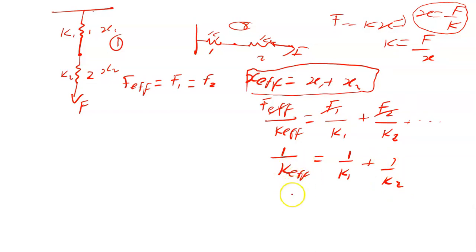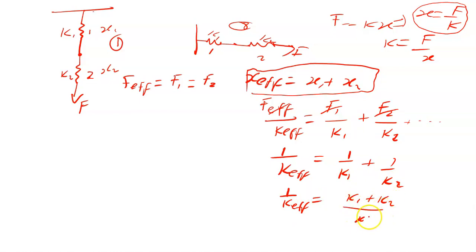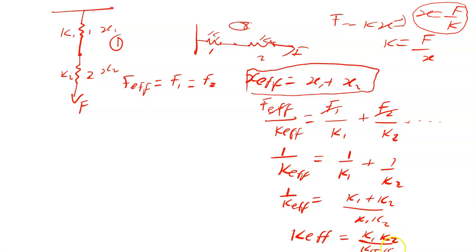Making Keff the subject of the formula, you have: one over Keff equals (k1 plus k2) over (k1 times k2). Meaning the effective spring constant equals (k1 times k2) over (k1 plus k2). You can use either form, but when making it subject of the formula for two springs, this is what you get.